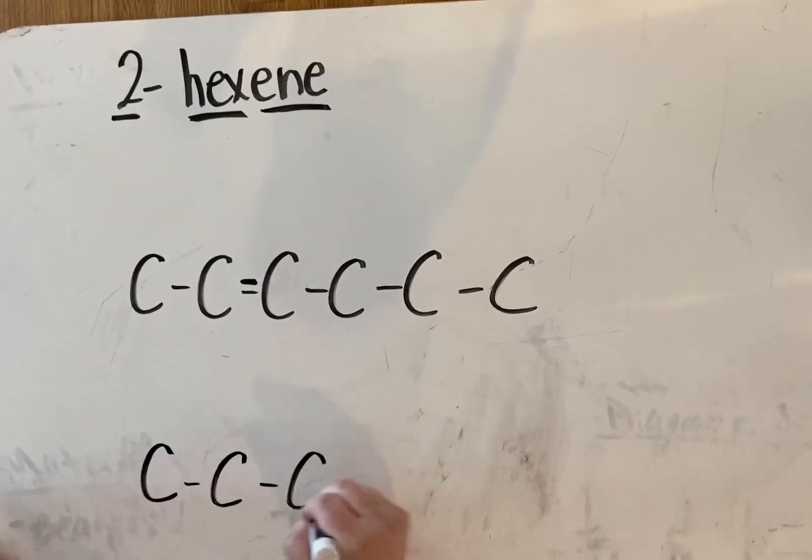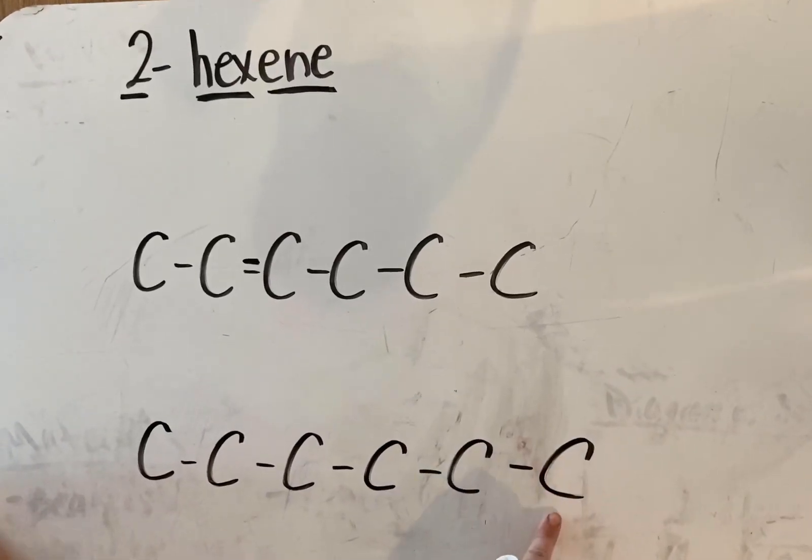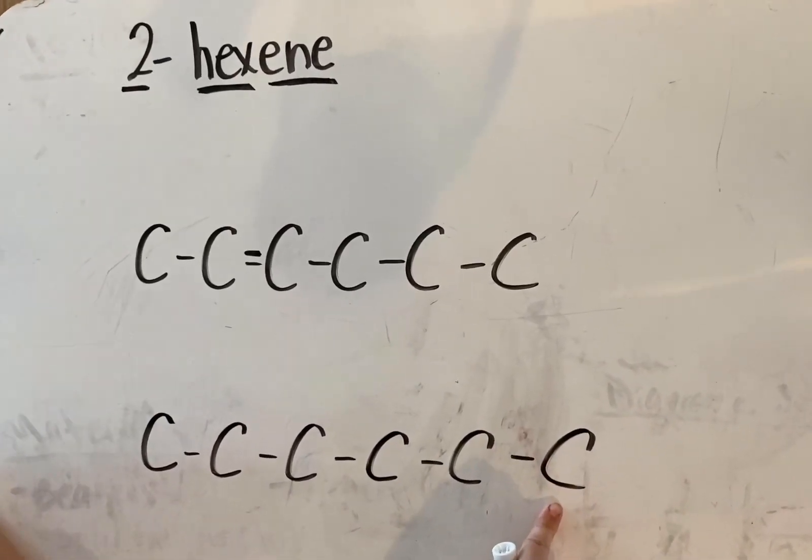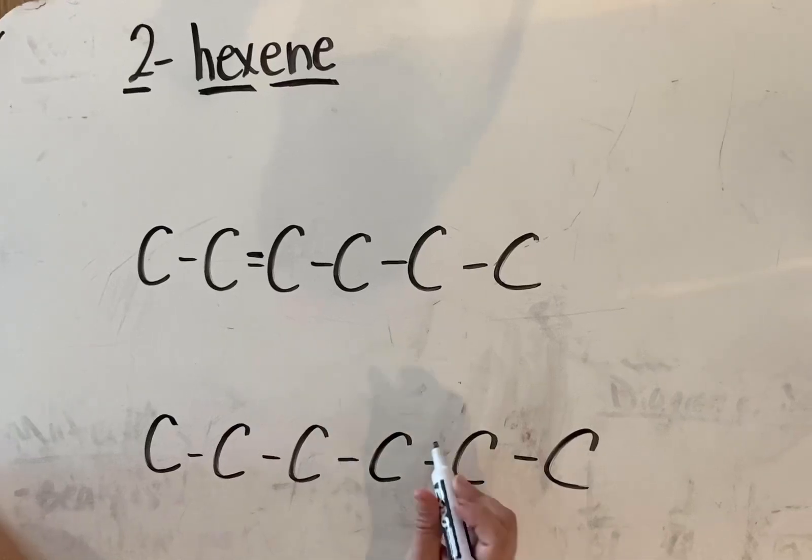If instead, when I decided to count, I count this as carbon number one, that -ene, that double bond must start on this carbon number two. So it'd be right here.